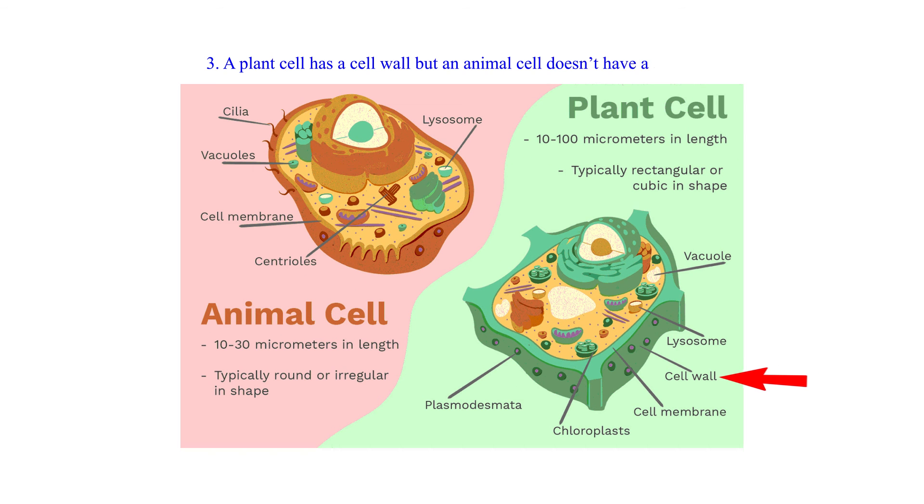3. A plant cell has a cell wall but an animal cell doesn't have a cell wall.